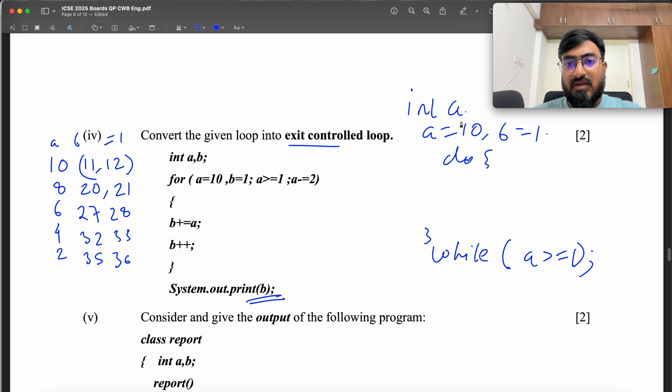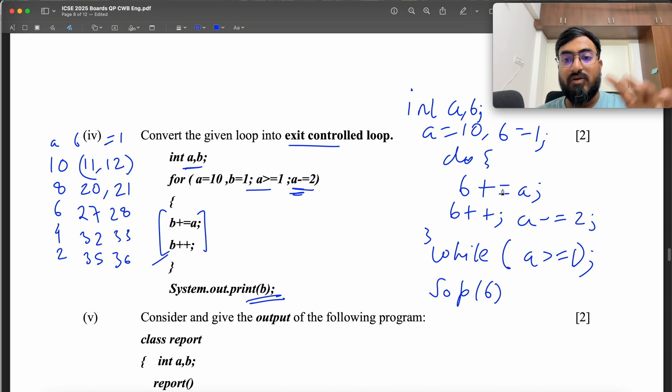So for this, we can do while A greater than equal to 1. You start with A equal to 10, B equal to 1. And you can do int A B. Make sure you declare A 10, B 1. Do for A equal to 10, you do B plus equal to A, B plus plus. And now we need to add this part. This decrement happens after B plus equal to and B plus plus, so A minus equal to 2. Then finally SOP B. You have to initialize them outside the loop because this is an exit control loop.